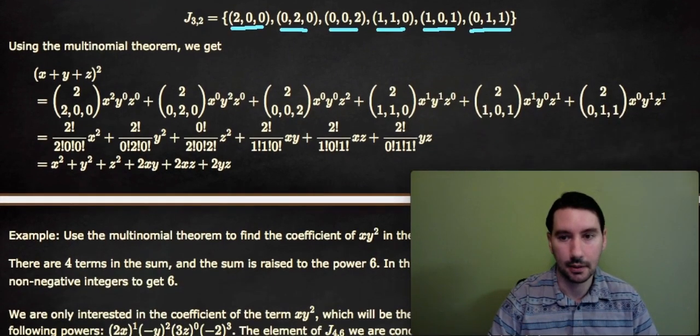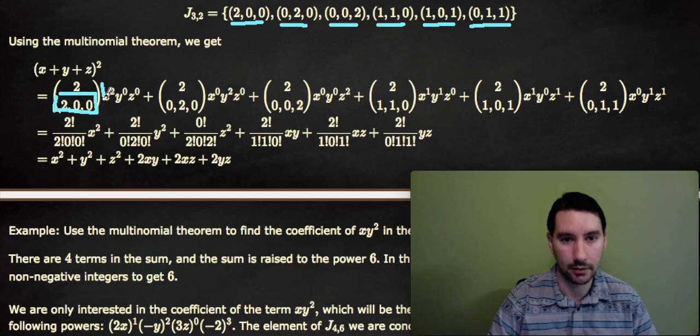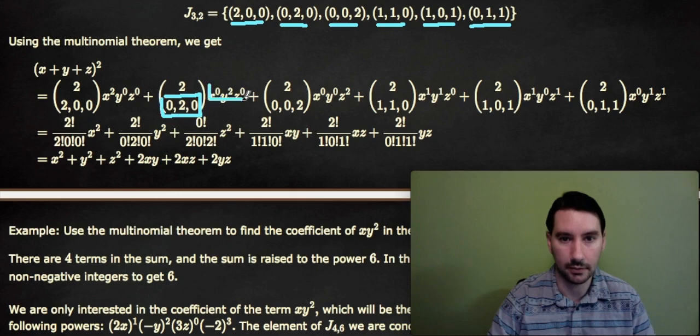And the sum, which we expand here, is we have 2 choose (2,0,0) times x² y⁰ z⁰. So notice the (2,0,0) is in two places. It's in the choose, and it's also these exponents. It's (2,0,0). Then we go to the next term in this tuple, which is (0,2,0). So we do 2 choose (0,2,0), and then we have (0,2,0) in the exponents.